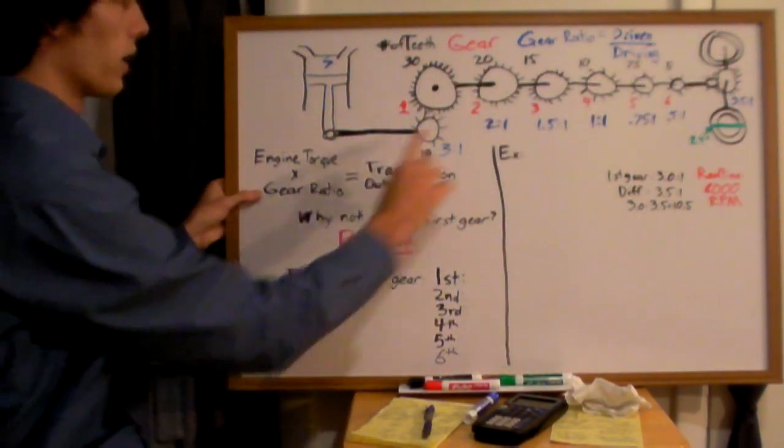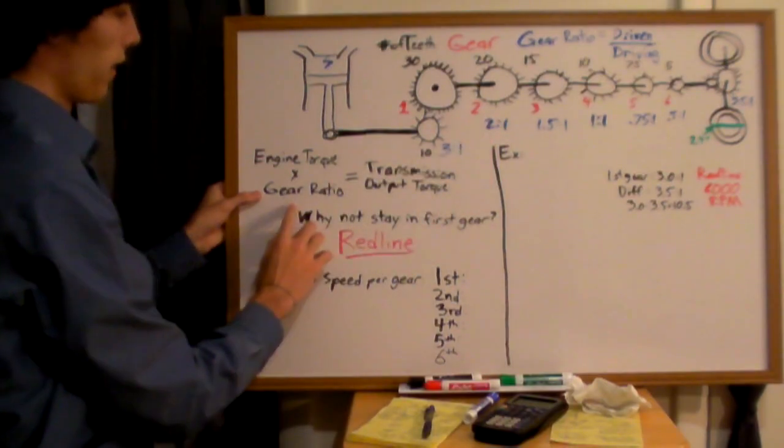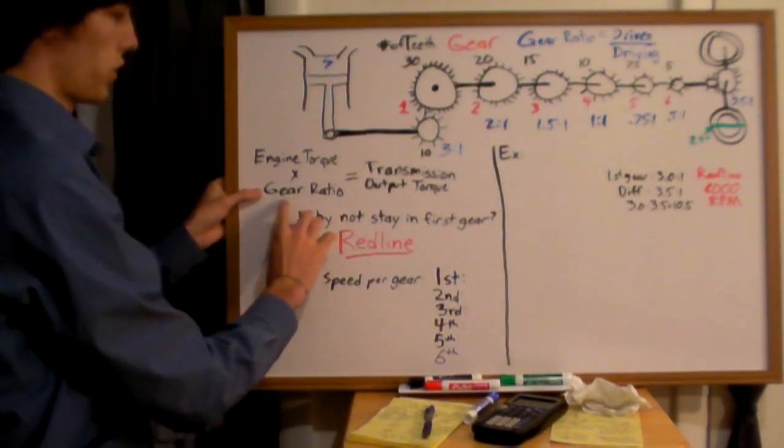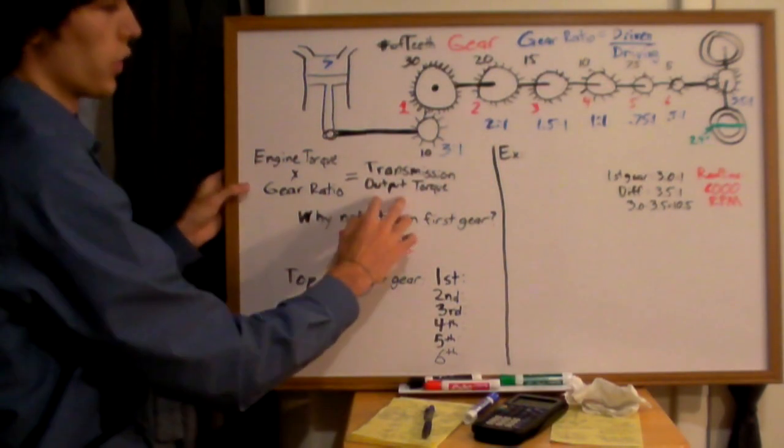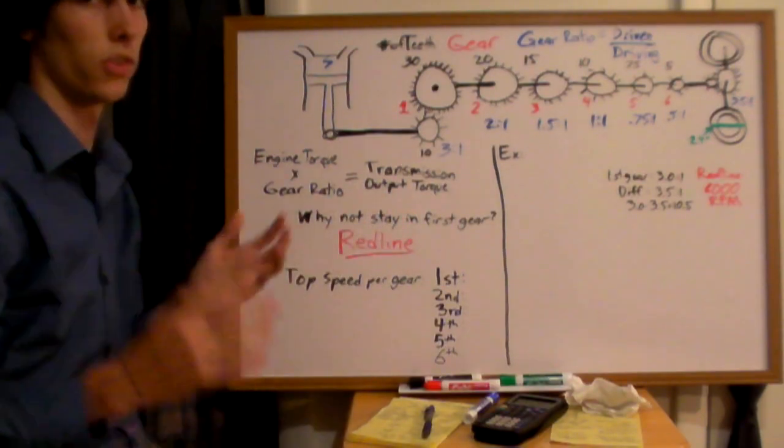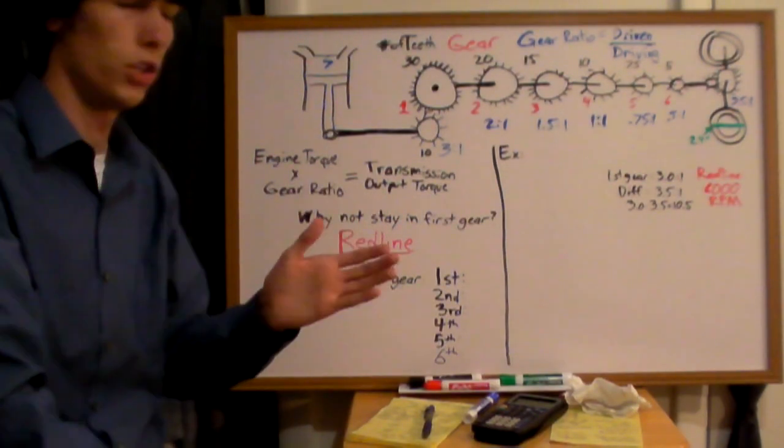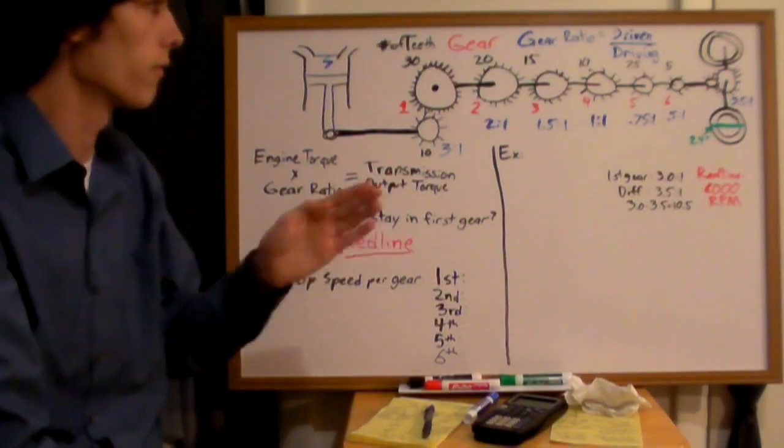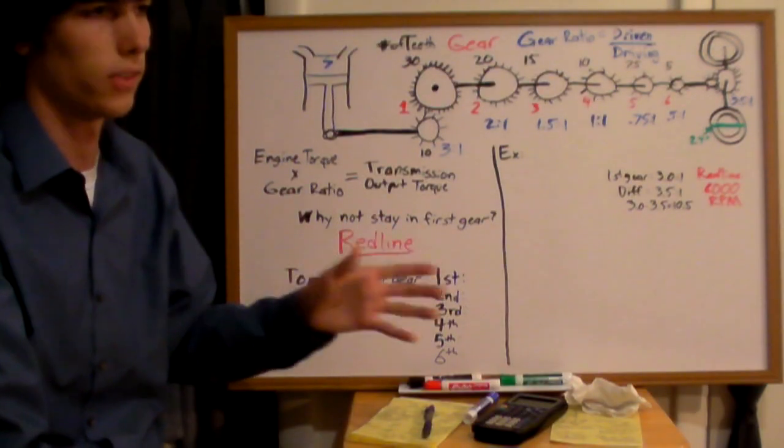Now, if you have a lower gear ratio, you're in second gear, then you're going to have a 2 here instead of a 3. So you can see that your transmission output torque is going to be slightly less. That's what people are saying when they say you get the most torque in first gear, and therefore the greatest acceleration.